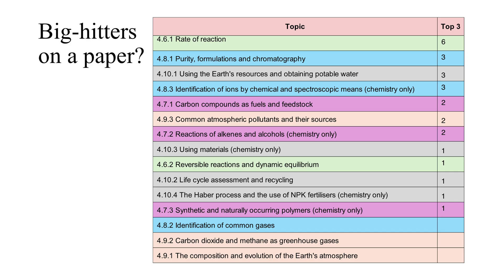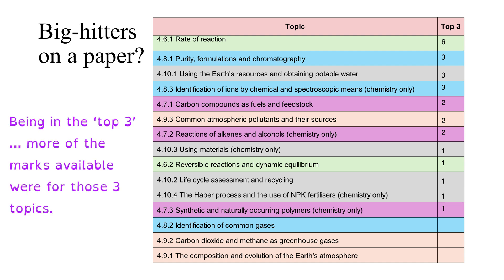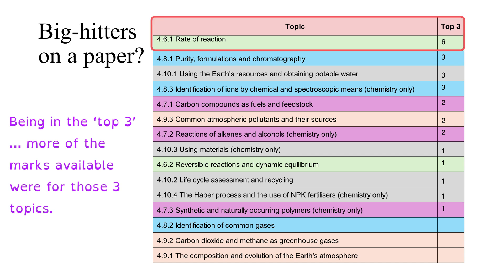Each year, some subsections are worth more marks than others, so I've identified the 'big hitters' by working out the top three subsections each year. By this measure, the rate of reaction subsection appears in the top three six times out of seven, standing out as clearly worth revising with great intensity. After that there's no real standout — several subsections appear in the top three two or three times, so rate of reaction is the only one that stands out by this methodology.